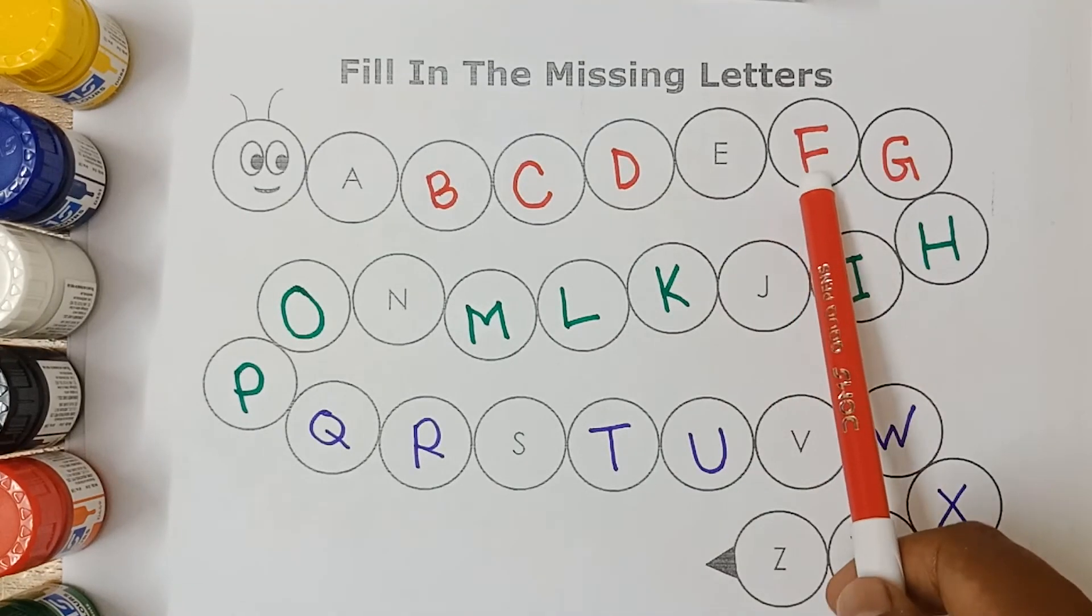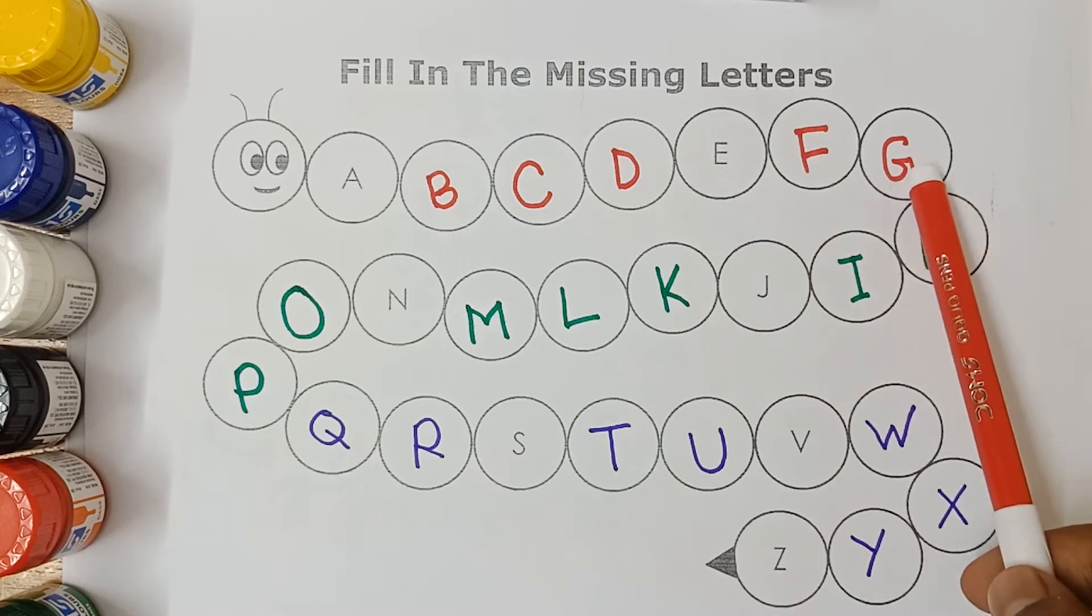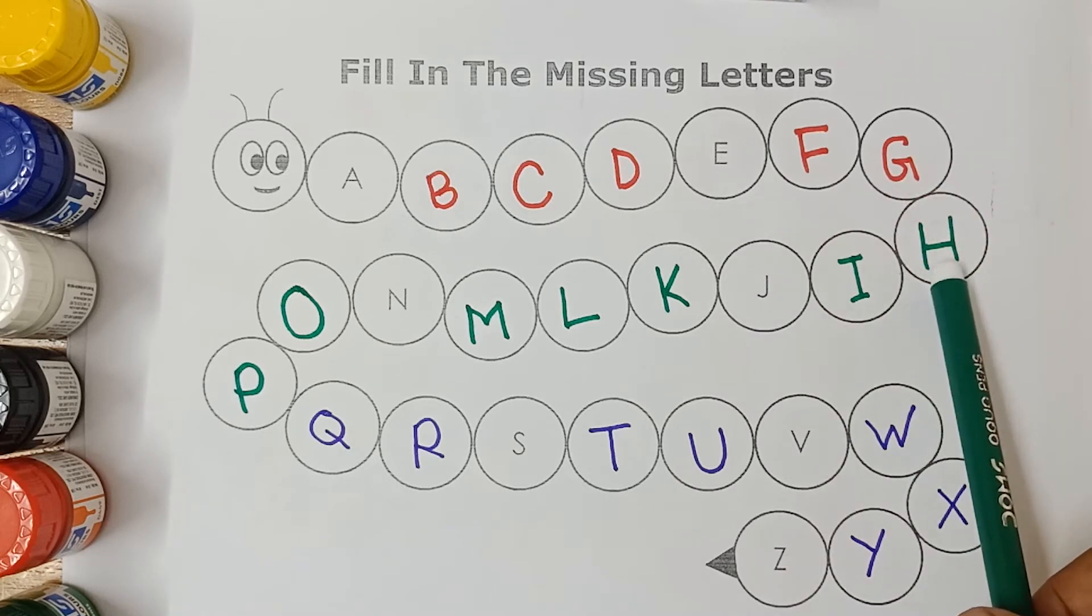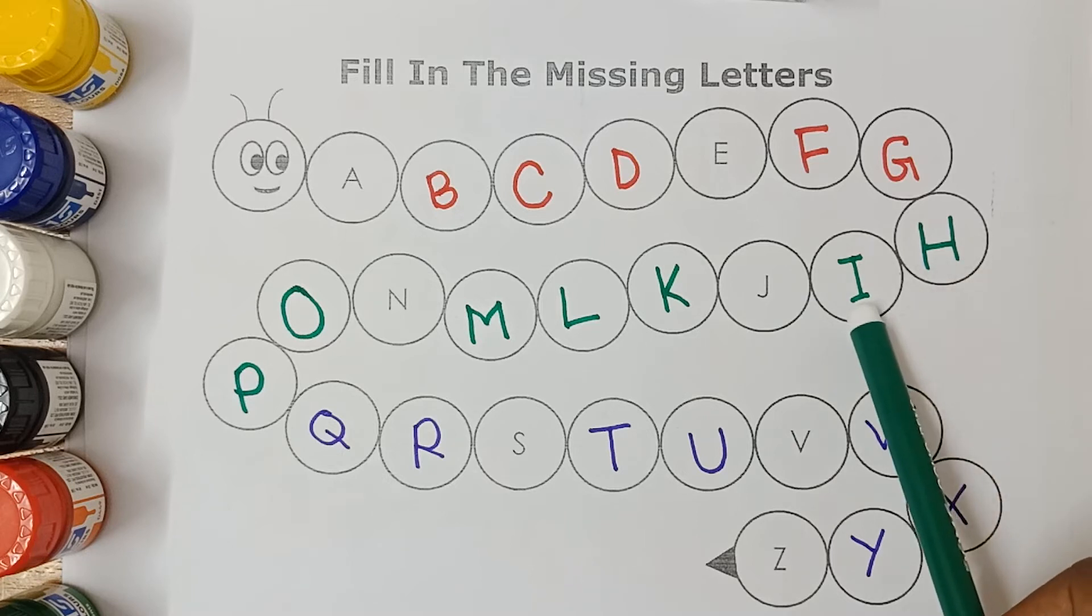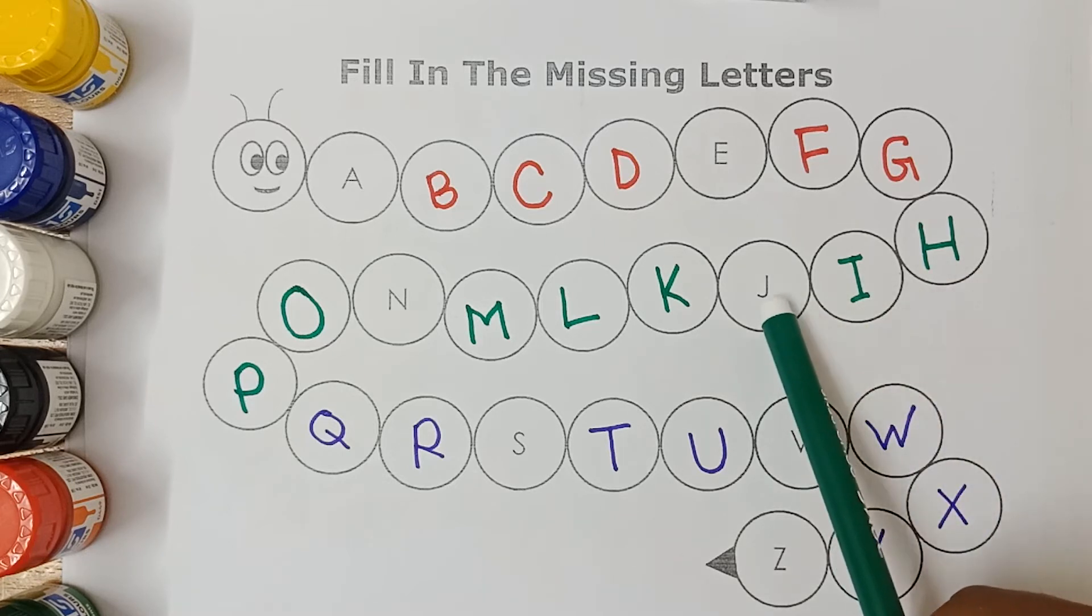F, F for fish. G, G for ground. H, H for hand. I, I for igloo. J, J for jug.